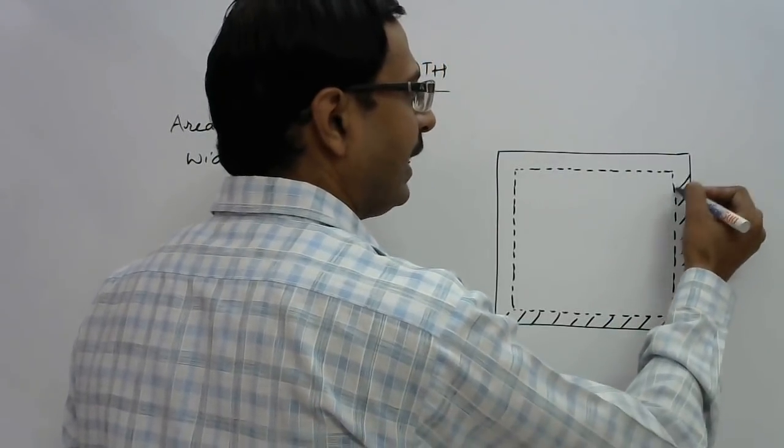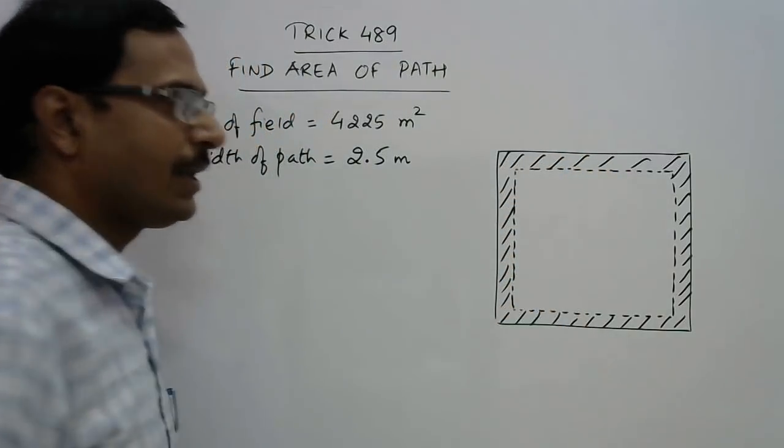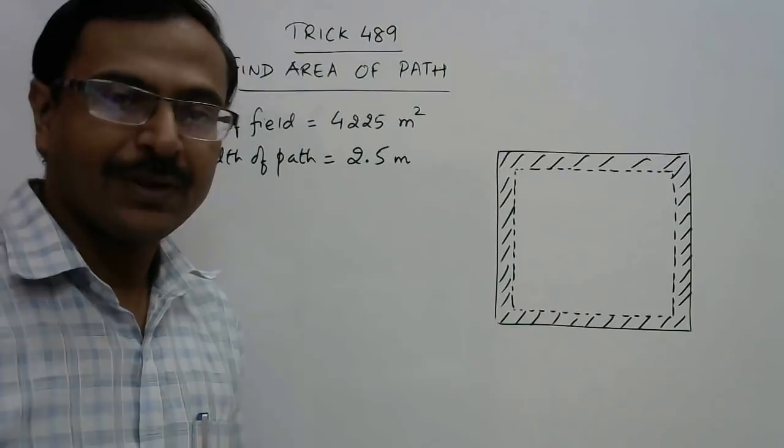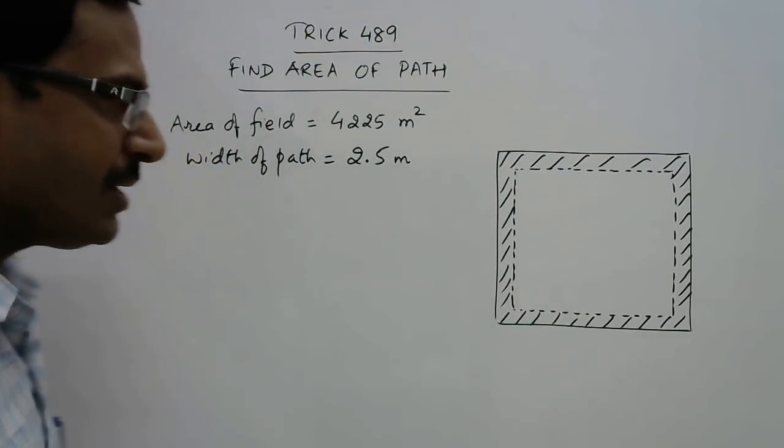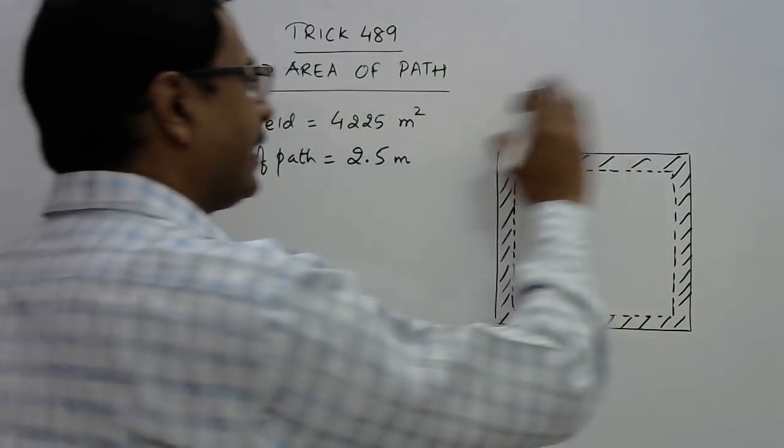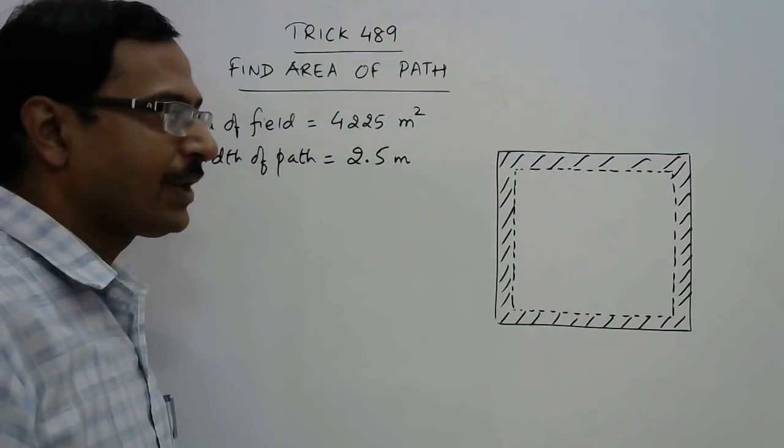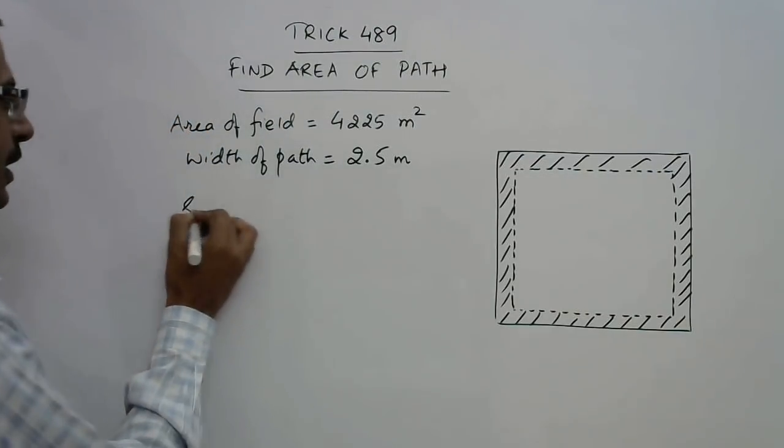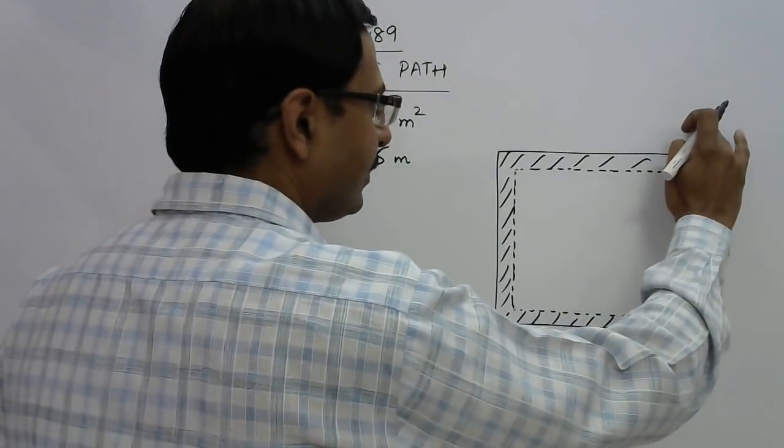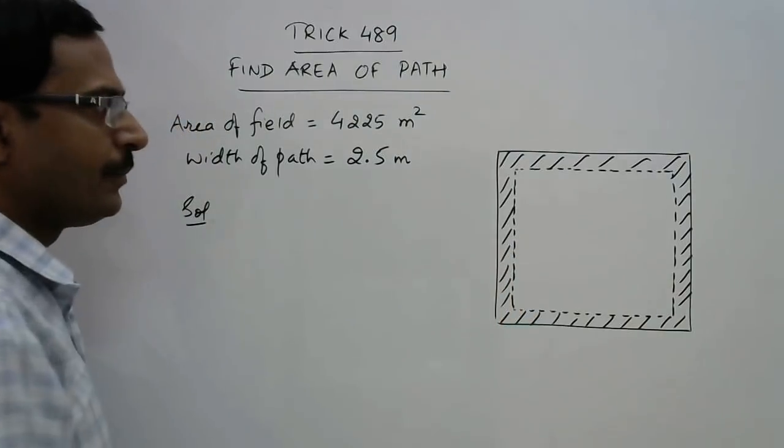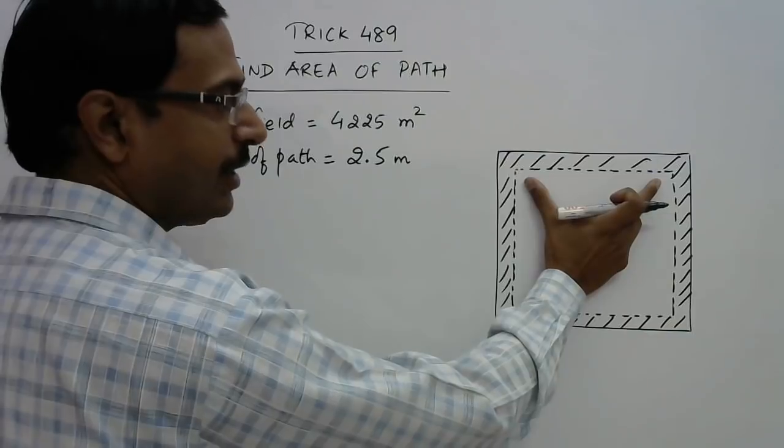I know most of you are very acquainted with the method to solve this question, but how to solve this in very less time, that is important when you attempt this question in competitions. Now see, the area of the field, that is the entire large square, is given as 4225. So the first thing is to find the side of the square so that we can find out how much is the inside boundary of the path.